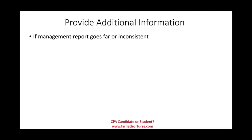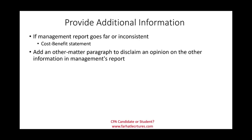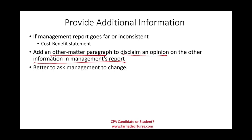The fourth reason is to provide additional information. The classic case is when management's report goes beyond or is inconsistent with what they're supposed to say. For example, a classic exam question involves a cost-benefit statement where management says they did not fix an internal control issue because the cost outweighed the benefit. As an auditor, you may need to add a paragraph disclaiming an opinion on that other information in the management report, so readers don't think you agree with that statement. It is always better to first ask management to change those inconsistent or out-of-scope statements.